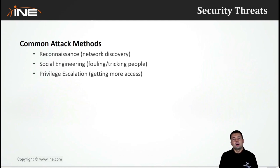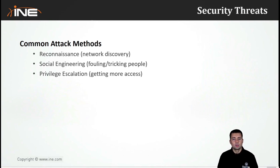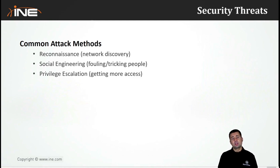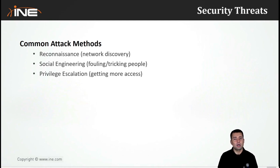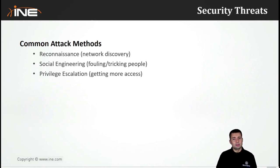Privilege escalation attacks rely on a certain level of existing access to a system to expand that access further. For example, a junior admin placed at privilege level 1 on a Cisco router can only read configurations, but if they can access the 'enable' command and break the password, they could reach privilege level 15. That would be privilege escalation — starting with a limited set of privileges and trying to gain more than intended.